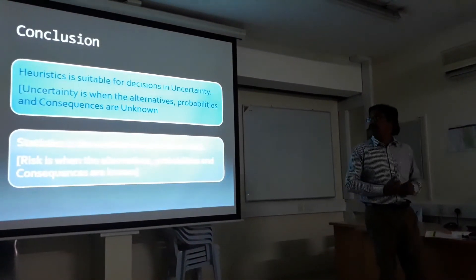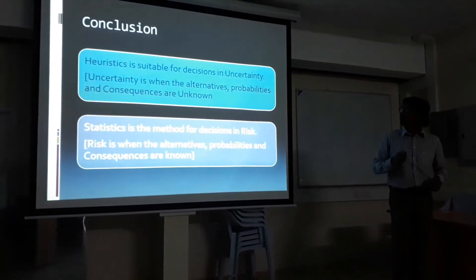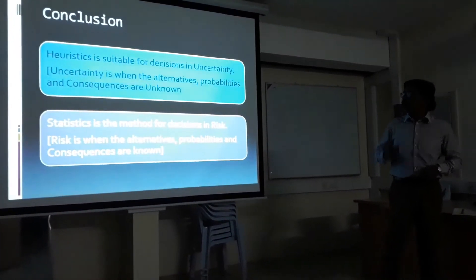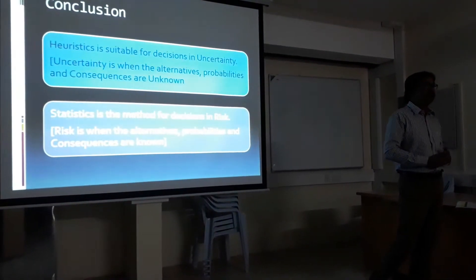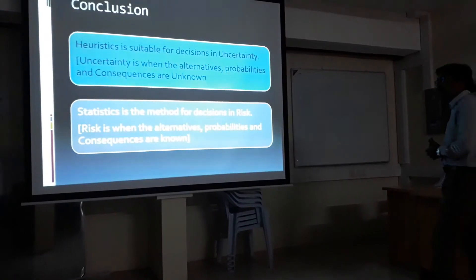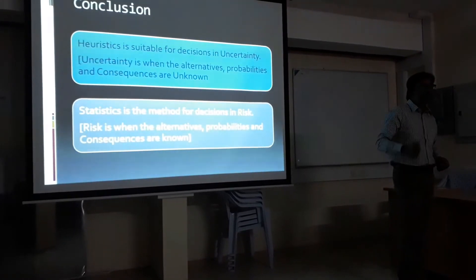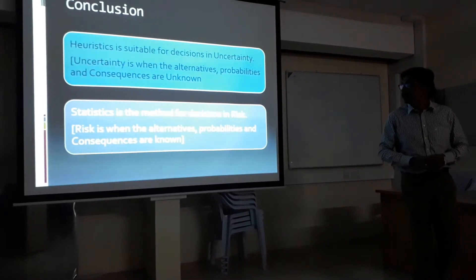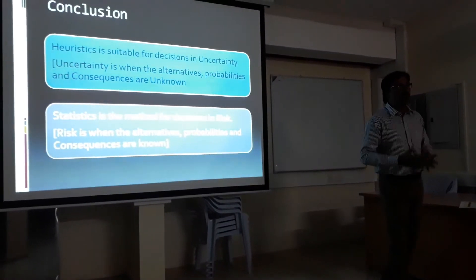In conclusion, heuristics is suitable for decisions made under uncertainty. Uncertainty is when there are no alternatives, no probabilities, and no known consequences. On the other hand, statistics is the method for decisions made under risk. Risk is when the alternatives, probabilities, and consequences are known. Heuristics plays a major role in our decision-making process.